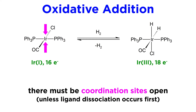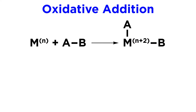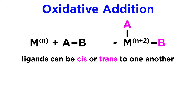In addition, there must be coordination sites open, unless ligand dissociation is to occur first. Speaking generally, this reaction involves some metal in the N oxidation state reacting with some substance AB, where the bond between A and B will break as each fragment becomes a separate ligand on the metal. This results in an oxidation state of N+2 for the metal, and the ligands A and B could be either cis or trans to one another, depending on the situation.